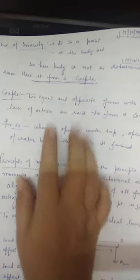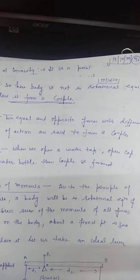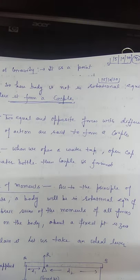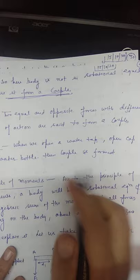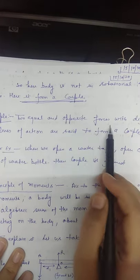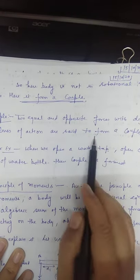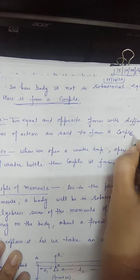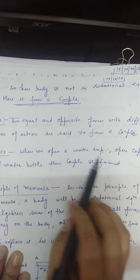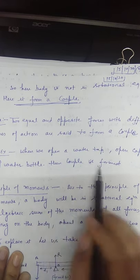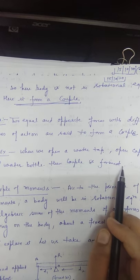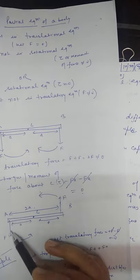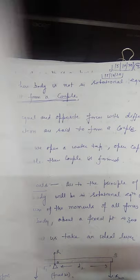So a couple is defined as two equal and opposite forces with a different line of action. Two opposite forces with different lines of action are said to form a couple. Examples include opening a water tap and opening the cap of a water bottle.